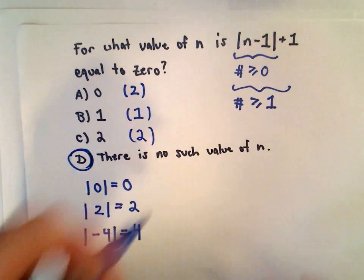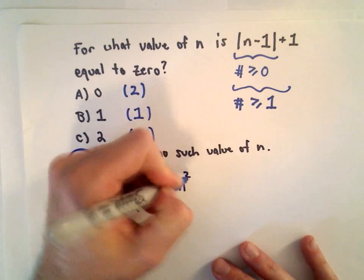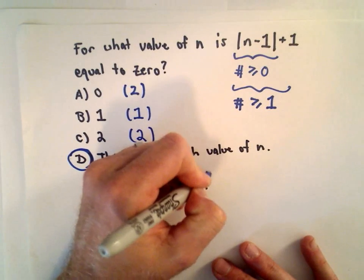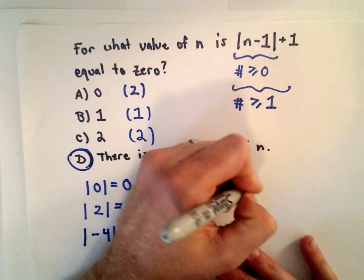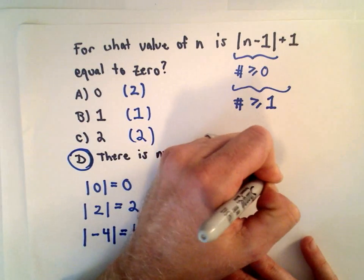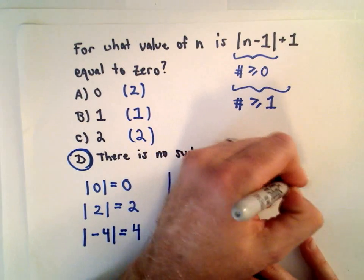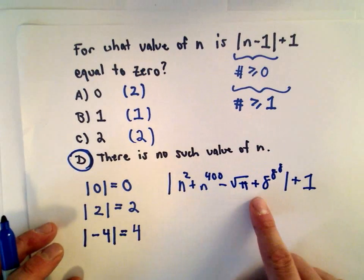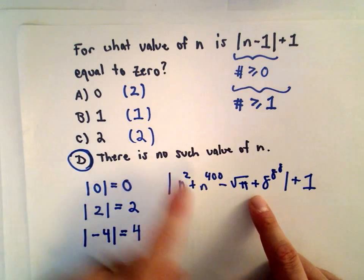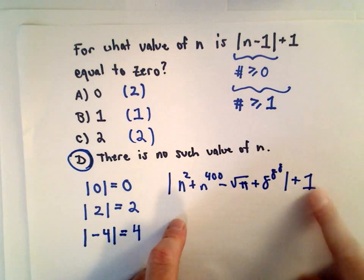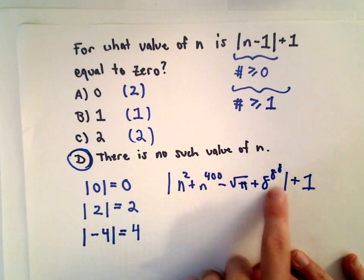They could give you some really wonky problem. They could make it like n squared plus n raised to the 400th power minus the square root of pi plus 8 to the 8 to the 8 plus 1. What value of n? They could ask you the same question. For what value of n is this quantity equal to 0? Same thing.